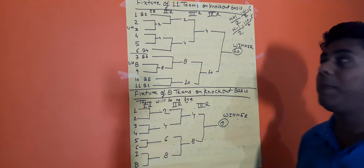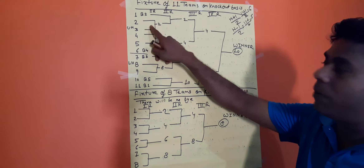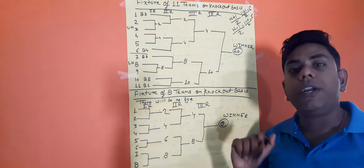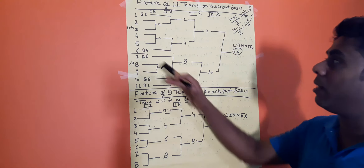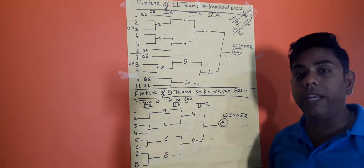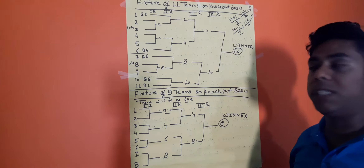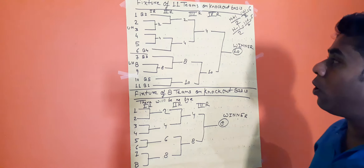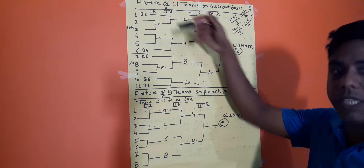The problem arises with an odd number of teams. For example, 1 will play with 2, 3 with 4, 5 with 6, 7 with 8, 9 with 10 — but what about team 11? One team will be left over, and in the next round we again get an odd number of teams. So we need to arrange the teams properly using the bye method.